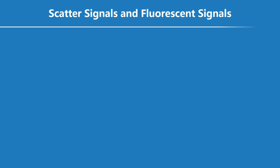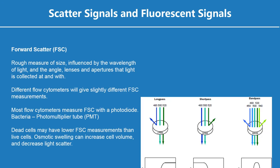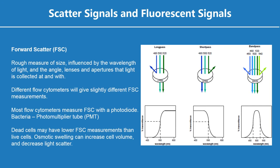Forward scatter (FSC) is a rough measure of size, influenced by the wavelength of light, the angle, lenses, and apertures that light is collected with. Different flow cytometers will give slightly different FSC measurements. Most flow cytometers measure FSC with a photodiode. Dead cells may have lower FSC measurements than live cells. Osmotic swelling can increase cell volume and decrease light scatter.